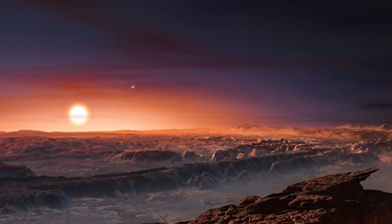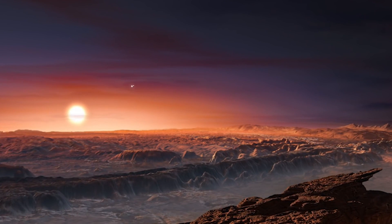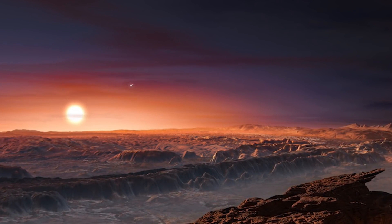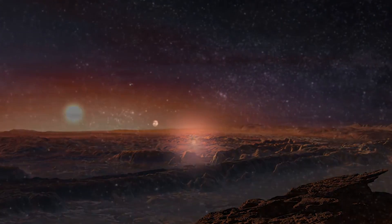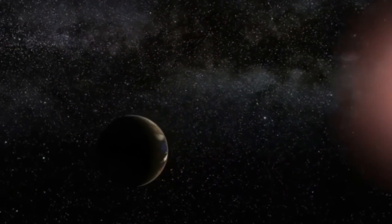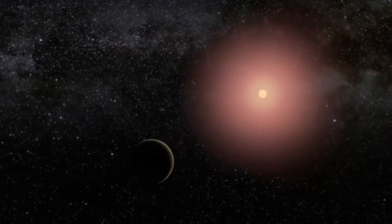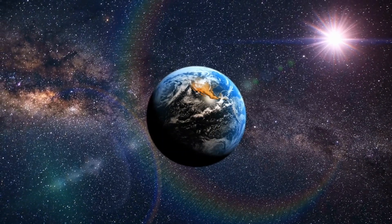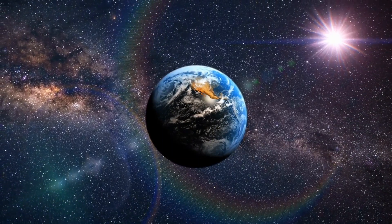Because of its potential to support life, Proxima b is one of the most exciting exoplanets. Its existence in the habitable zone of its star means that water could exist on its surface, a key ingredient for life as we know it. The conditions on Proxima b, on the other hand, are far from hospitable.